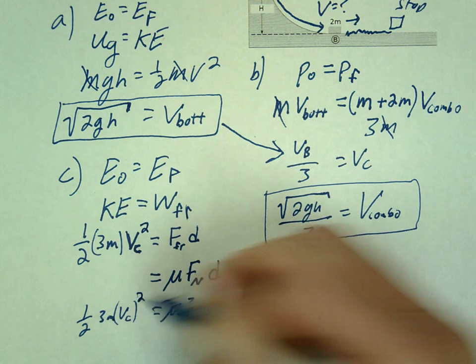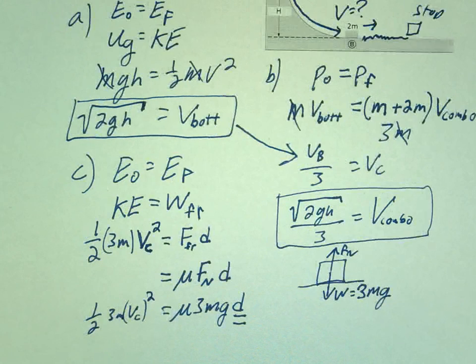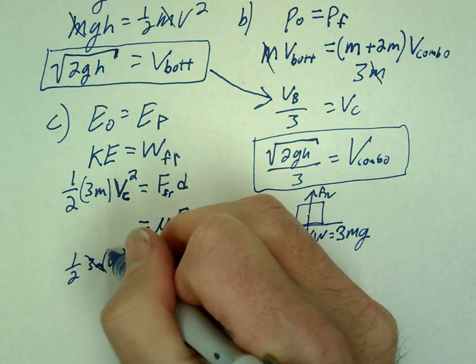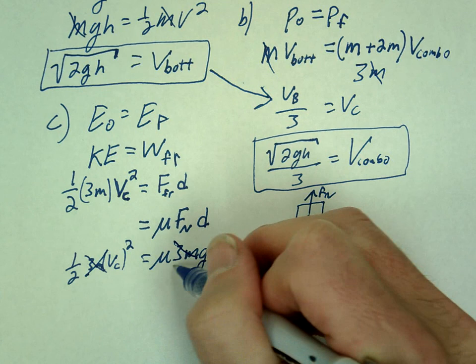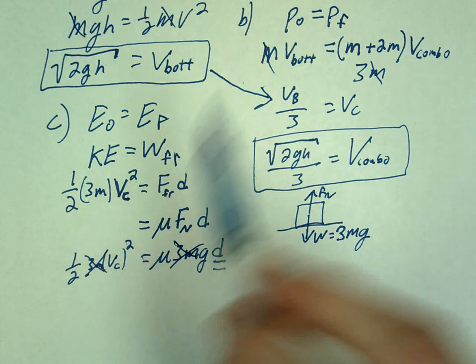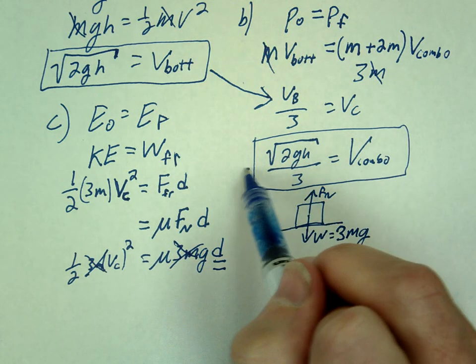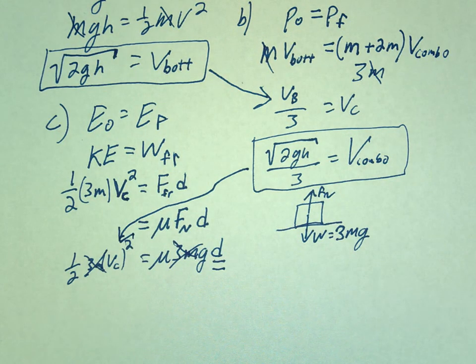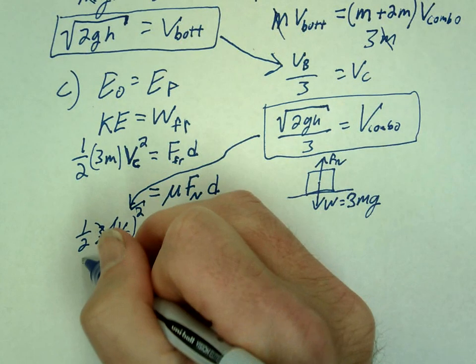We can cancel with 3m, right? 3m, 3m. Let's get rid of that. Can we be left with vc in the end? No. So where's our vc? Vc is way over here. So we're going to need to substitute that in. Let's do that 1 half.